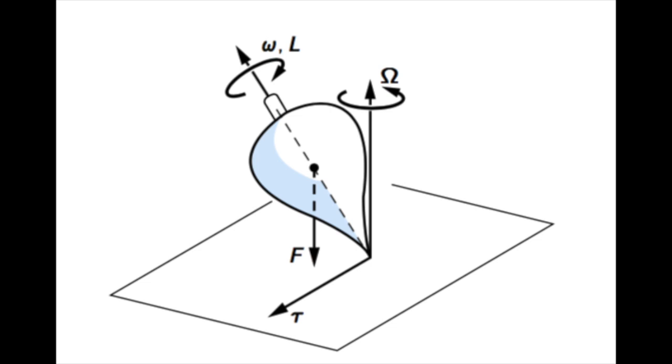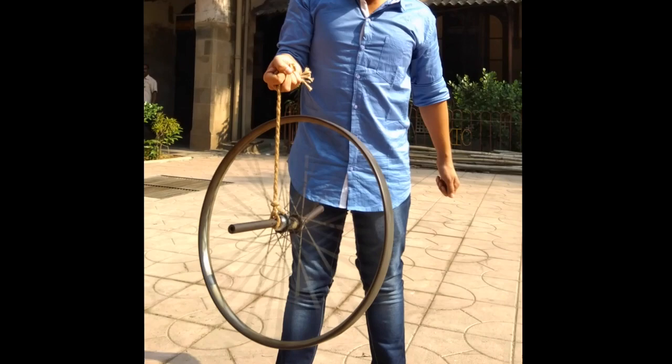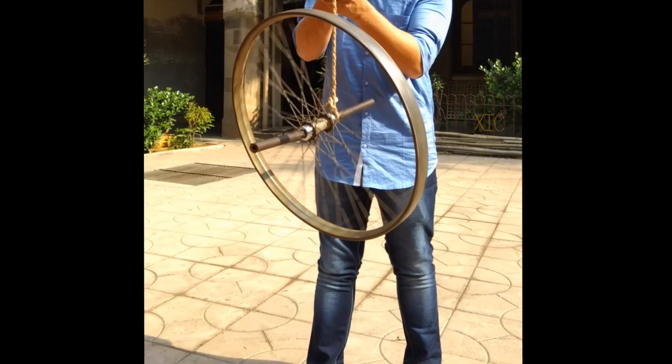What will happen when we have a wheel of bigger mass? As the wheel has greater mass, its moment of inertia is greater, so the precession angle will be smaller and the precession will decay over a longer time.